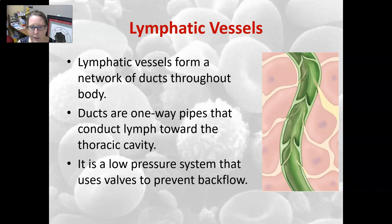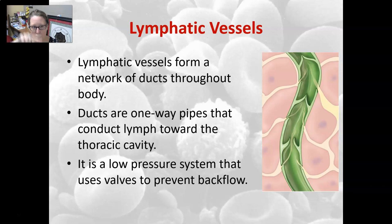The lymphatic vessels form a network of ducts throughout the body, but they are one-way paths that conduct lymph towards the thoracic cavity. The lymphatic system is different from the circulatory system because the circulatory system is a closed loop — from the heart to arteries to capillaries to veins and back to the heart. Lymphatic vessels start as a dead end in the capillary bed and connect to the venous circulation. It is a low-pressure system that uses valves, just like veins, to prevent backflow.